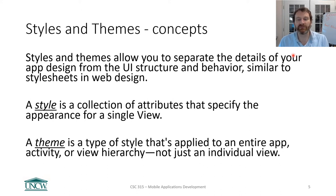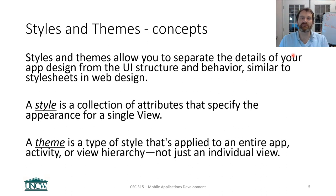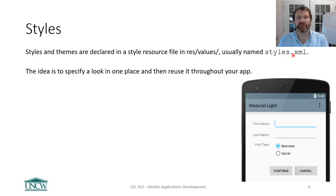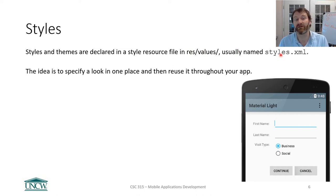A style is a collection of attributes that specify the appearance for a single view. When you create a button, you give it a border, padding, color, background color, font size — all that stuff. You can extract those specific properties and put them in a reusable location. A theme is a type of style that is applied to an entire app, an entire activity, or a hierarchy of views. You apply a style to one button; you apply a theme to all the buttons in your app.